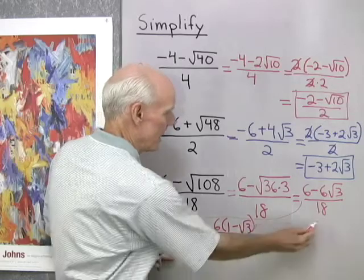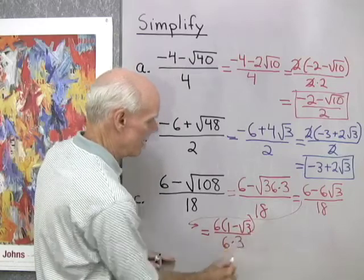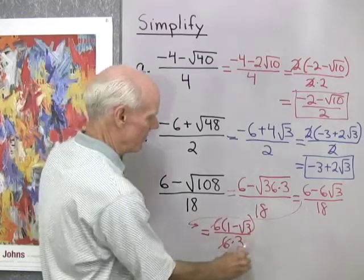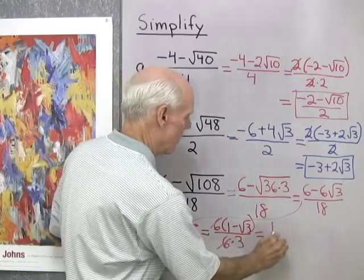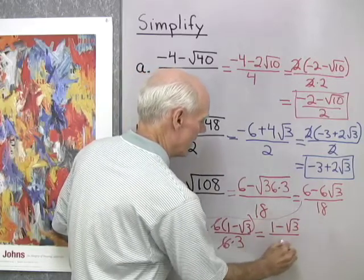All divided by 18, which I can write as 6 times 3. Now I'll divide out that common factor 6, and I have left 1 minus square root 3, all divided by 3.